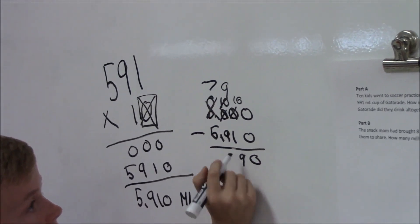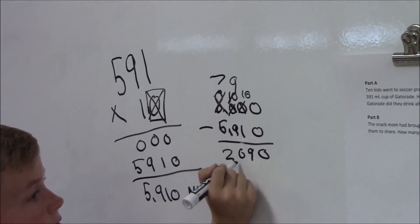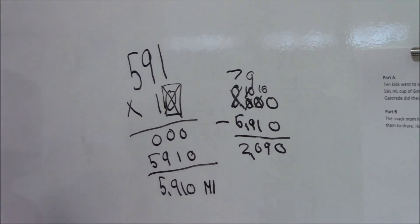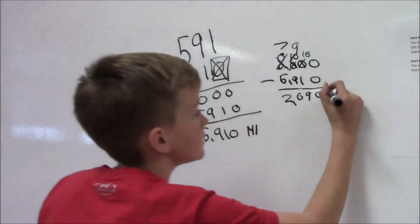Then we do 10 minus 1 equals 9. 9 minus 9 equals 0. 7 minus 5 equals 2. Then we get 2,090. 2,090 milliliters were left over.